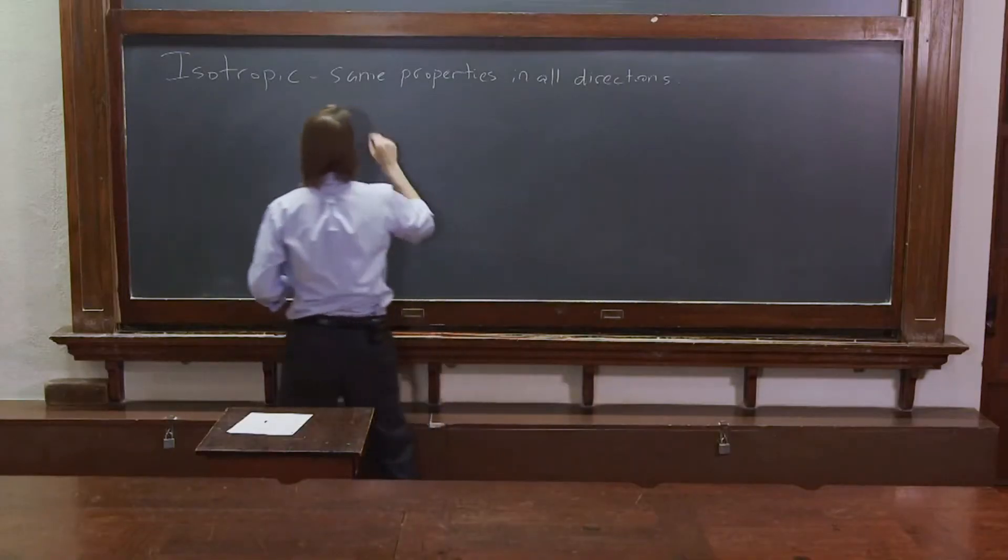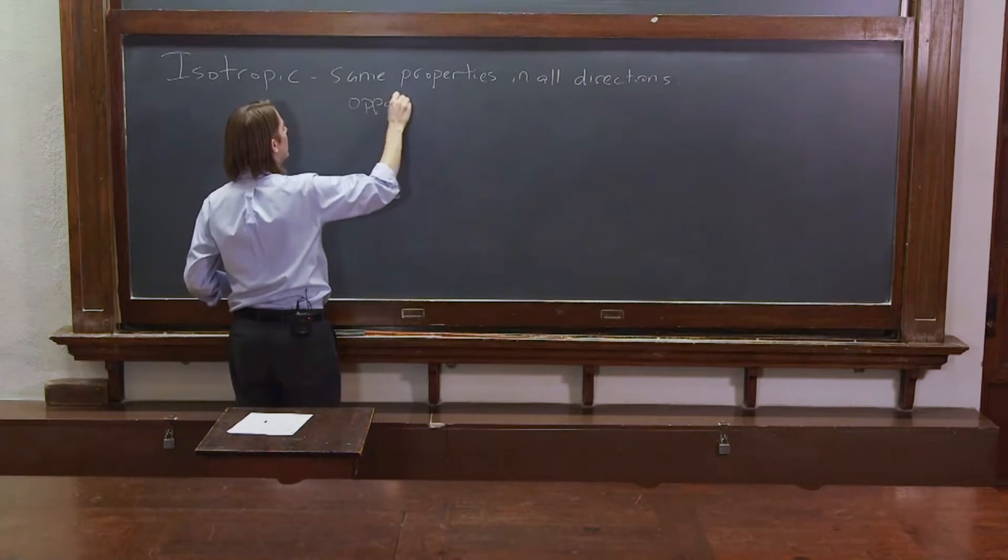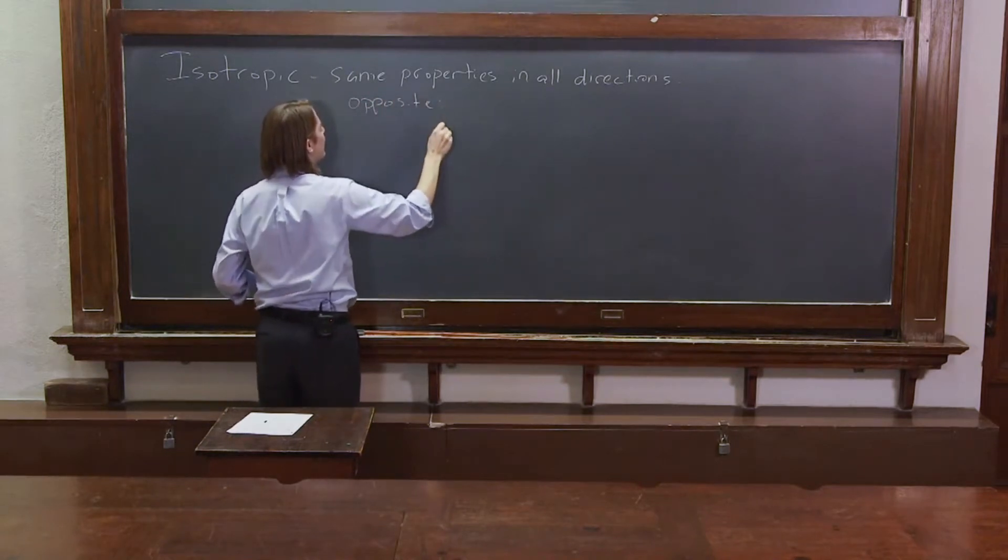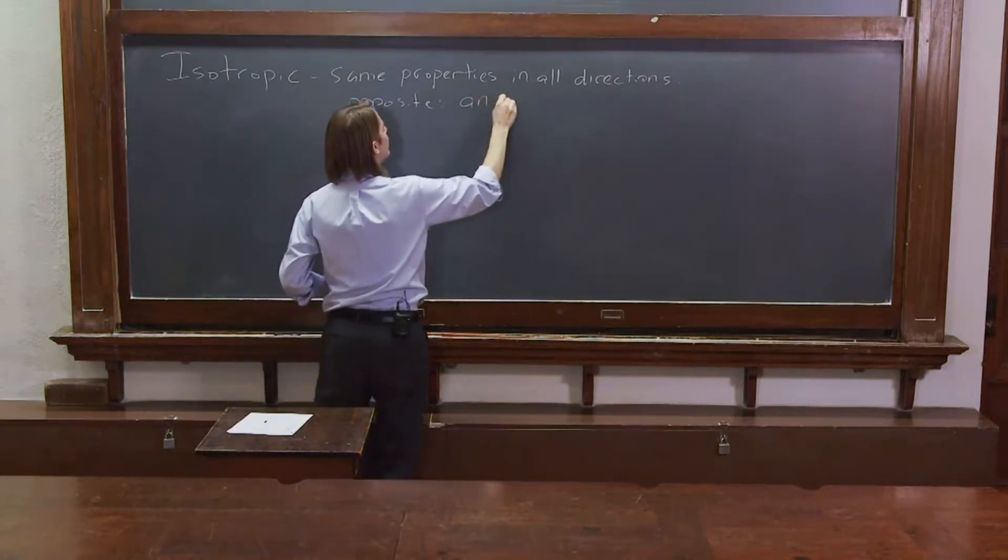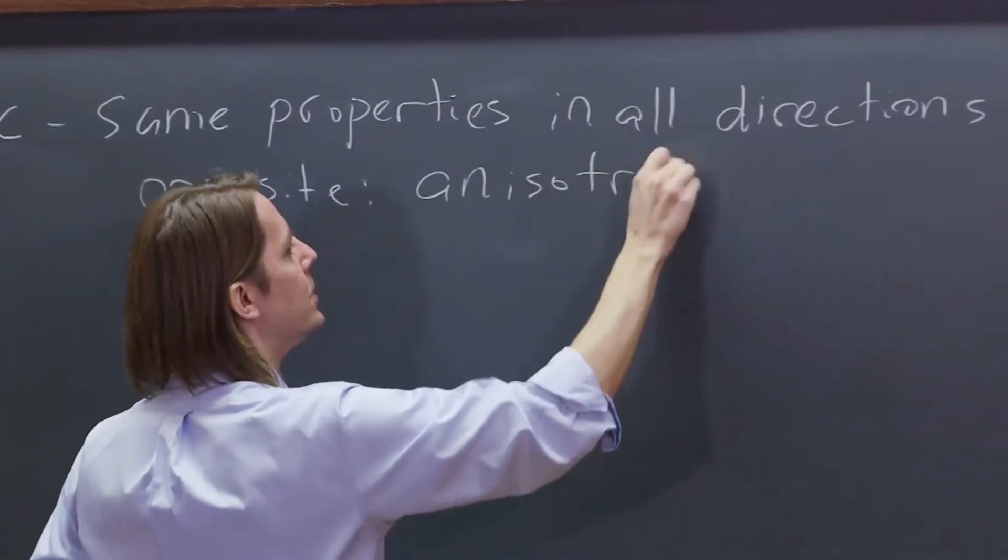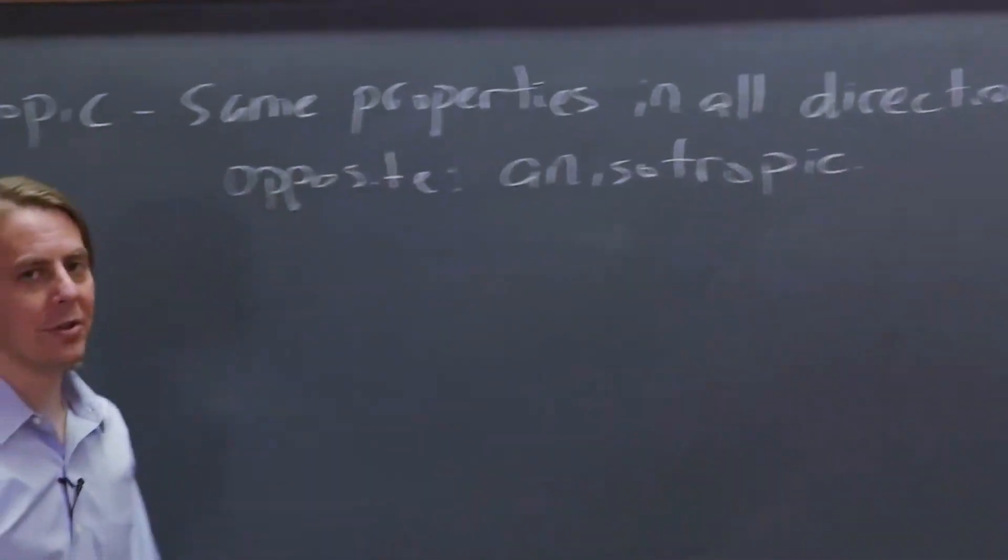And the opposite, if I were in a dictionary and wanted to give you the opposite, I would say anisotropic, which just means that the properties depend on the direction.